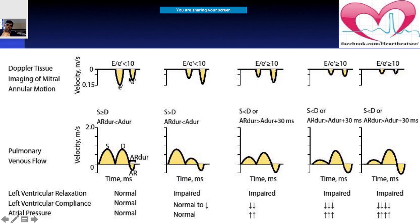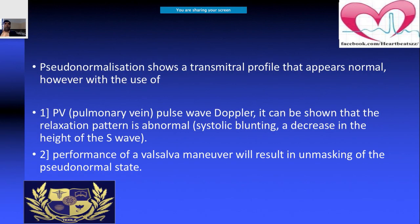With tissue Doppler imaging of the mitral annular motion, you can distinguish between normal and pseudo-normal patterns. The E/E' ratio is less than 10 for normal diastolic function, but greater than 10 for pseudo-normalization. You can also use pulmonary venous flow and measure LV relaxation, compliance, and atrial pressure. Multiple parameters should always be used — you should never depend on a single parameter when in doubt.